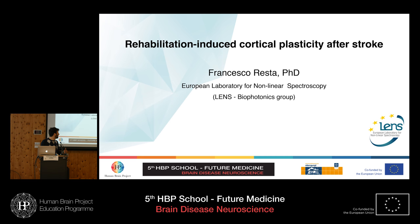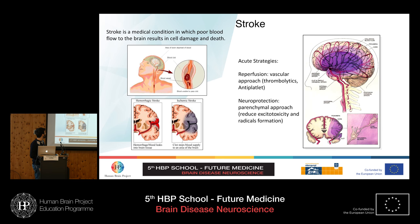In our laboratory, we study plasticity and rehabilitation for years, and I want to briefly give you an overview on the pathology first. Stroke is a disease in which the reduction of blood flow leads to cell damage and cell death. There are two main types of stroke: the hemorrhagic stroke, in which the blood vessel is disrupted and blood leaks into the parenchyma, and the ischemic stroke, in which a clot stops the blood supply to the area.